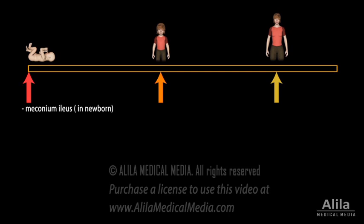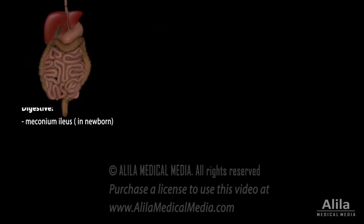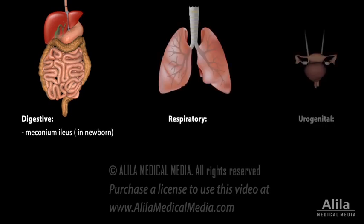CF is a multi-system disorder, but it affects mainly the digestive, respiratory, and urogenital organs. While respiratory insufficiency is the leading cause of mortality, digestive symptoms are usually the first to appear.